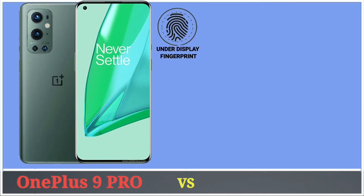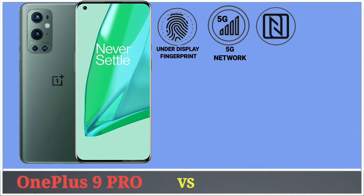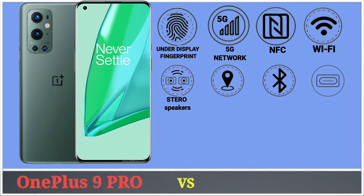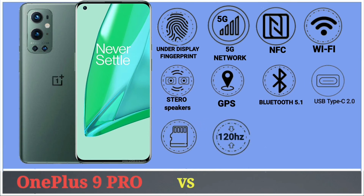For connectivity, OnePlus 9 Pro has an under-display fingerprint sensor and supports 5G network, NFC, WiFi, stereo speakers, GPS, Bluetooth, USB Type-C, UFS 3.1, and a 120Hz refresh rate.